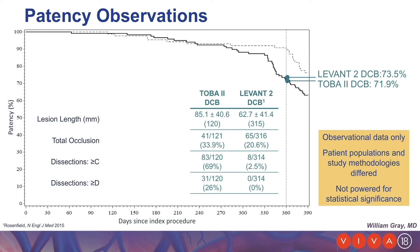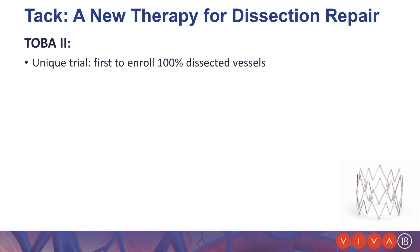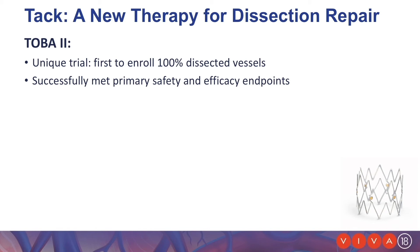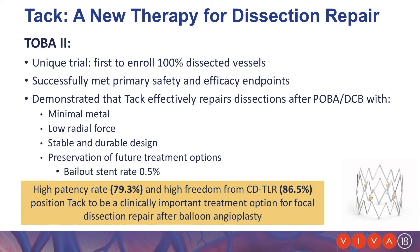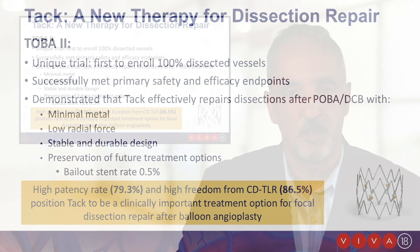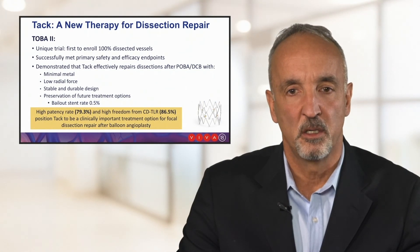In conclusion, TOBA II was a very unique trial and the first to enroll 100% dissected vessels. The TAC successfully met its primary safety and efficacy endpoints and demonstrated that it effectively repairs dissection after POBA and DCB with minimal metal, low radial force, and a stable and durable design — preserving future treatment options with an incredibly low bailout stent rate of 0.5%. The high patency rate of almost 80% and high freedom from clinically-driven TLR of over 86% position the TAC as a clinically important treatment option for focal dissection repair after balloon angioplasty.